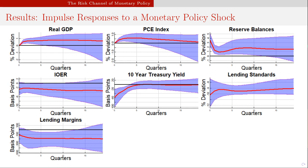The impulse response to a monetary policy shock: output goes up, prices go up — which I put in place. Interest on excess reserves and the 10-year treasury yield fall. Again it's more of a long-term interest rate channel operating, but that's not what we're most interested in — we're looking at lending standards and lending margins. Are banks willing to lower their lending standards, engage in riskier behavior, take on more risk to offset the profit reduction they're experiencing? We see lending standards drop by 10 percentage points.